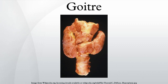Treatment: goiter is treated according to the cause. If the thyroid gland is producing too much T3 and T4, radioactive iodine is given to the patient to shrink the gland. If goiter is caused by iodine deficiency, small doses of iodide in the form of Lugol's iodine or KI solution are given. If the goiter is associated with an underactive thyroid, thyroid supplements are used as treatment. In extreme cases, a partial or complete thyroidectomy is required.